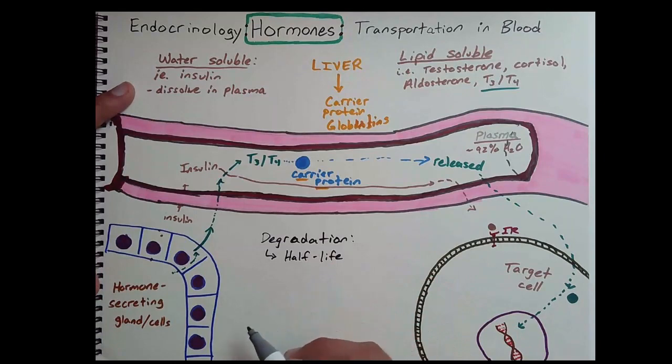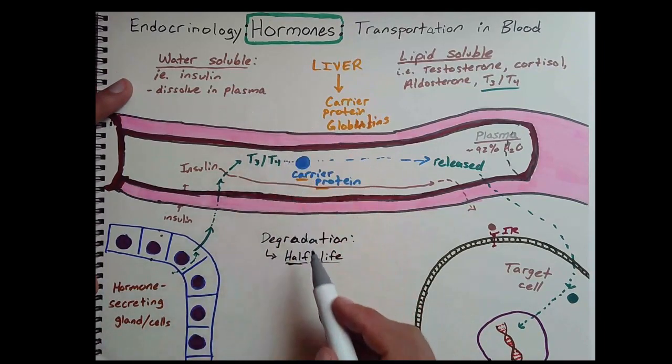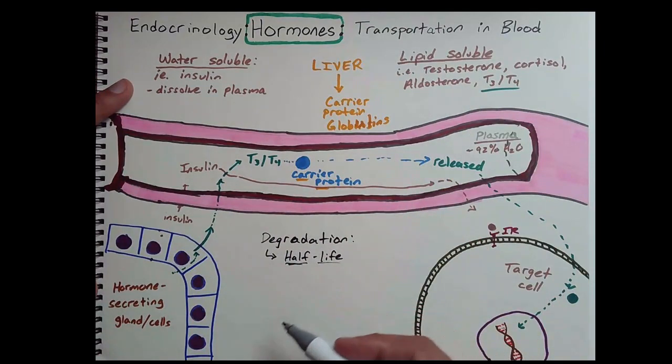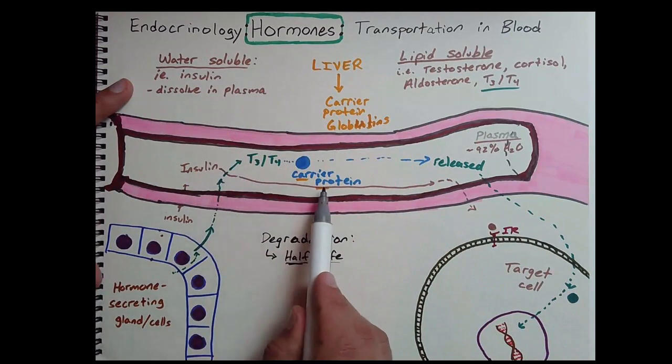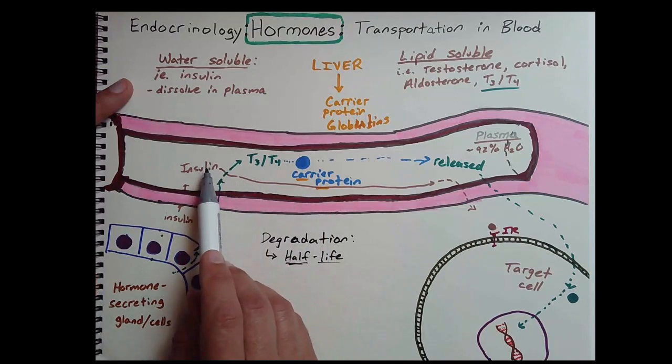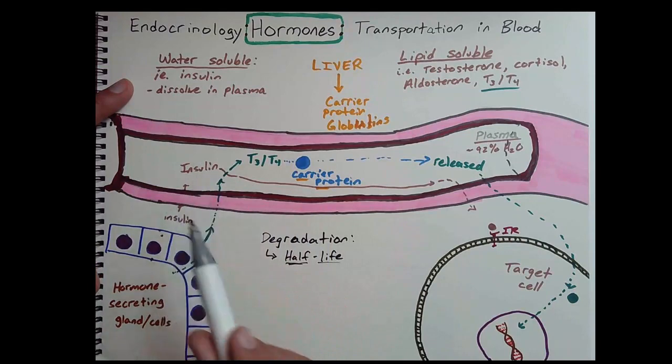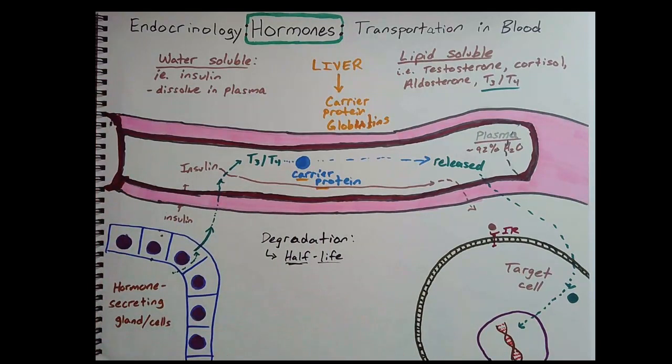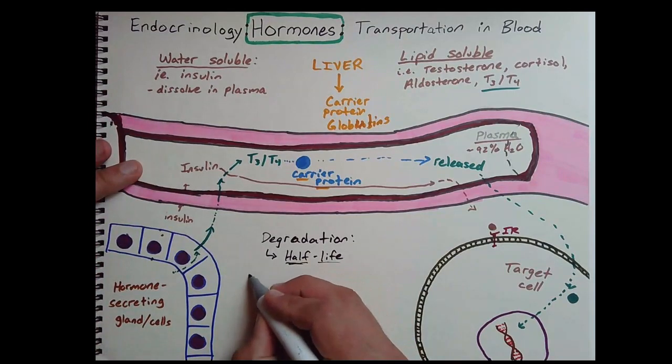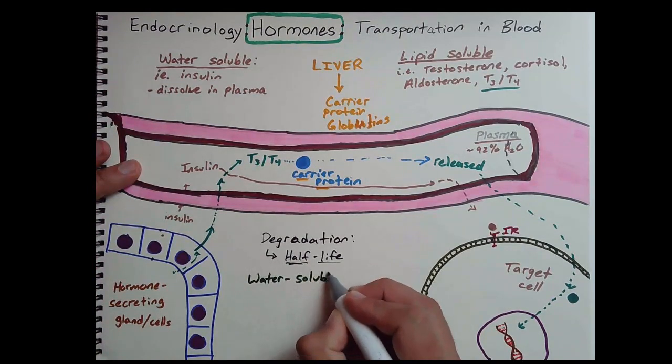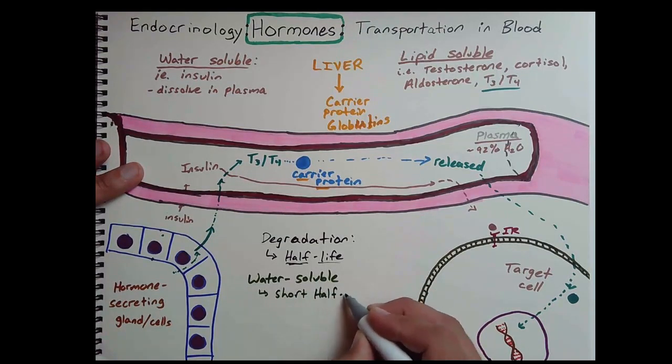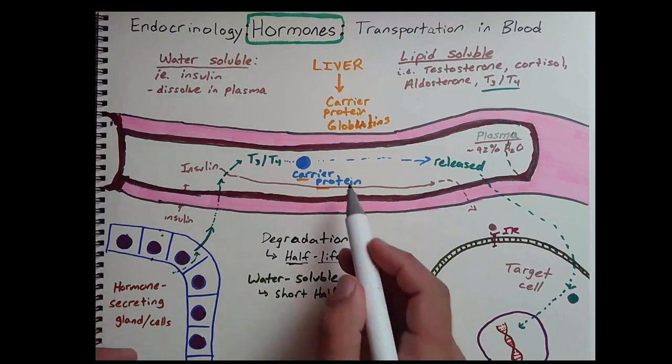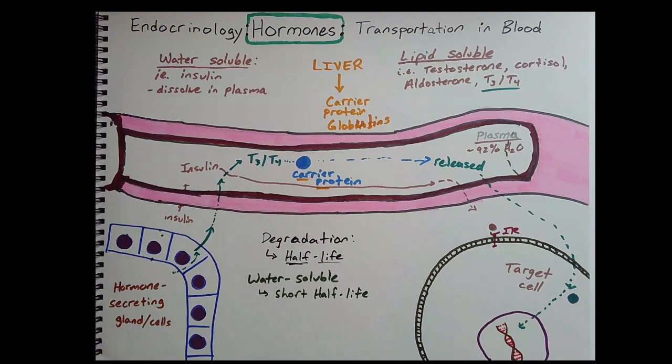This process of degradation, we term a half-life. It's the amount of time required to break down 50%, half, of the original chemical. So the half-life for a water-soluble hormone versus a half-life for a lipid-soluble hormone is the amount of time required to break it down. Water-soluble hormones just go into the bloodstream. They are not bound to a carrier protein because they can dissolve in the bloodstream. Therefore, they are not protected against degradation. So a water-soluble hormone has what's known as a very short half-life.